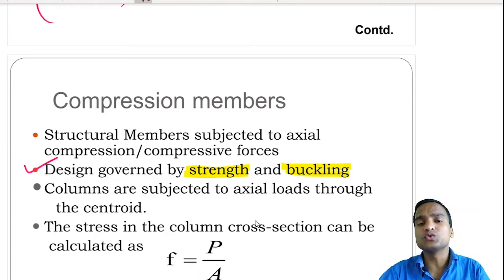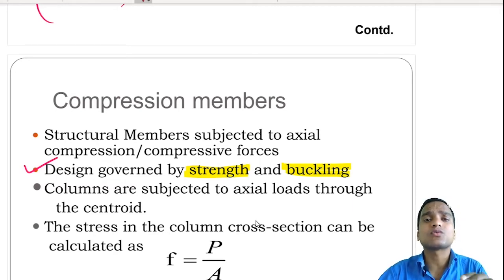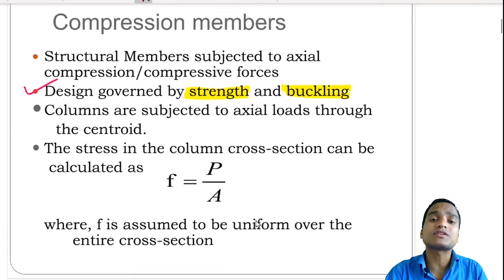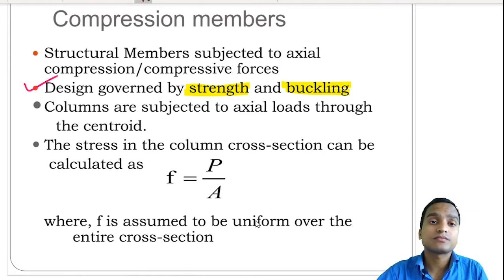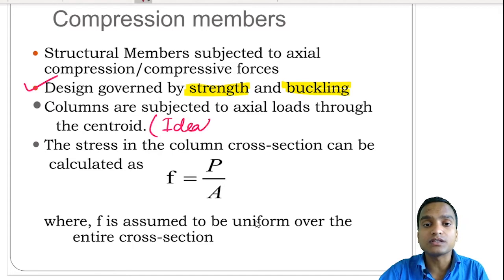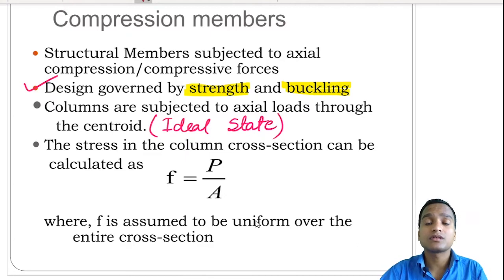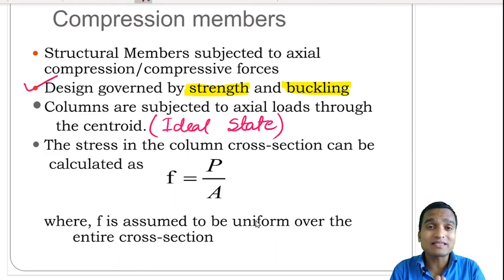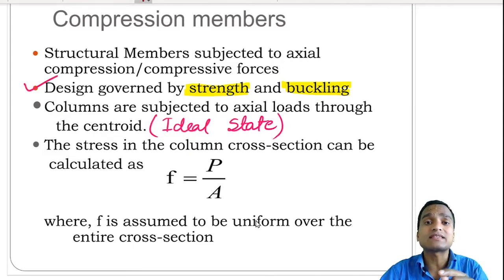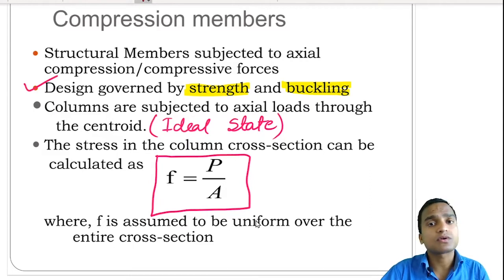Generally we don't use many empirical approaches or formulas for compression members. The main formula used is: stress equals axial force divided by cross-sectional area. This applies when columns are subjected to axial load through the centroid — which is only in the ideal state, not real life. In the ideal state, stresses in the column's cross section will be uniform throughout its length, equal to axial force divided by cross-sectional area. Here F is assumed to be uniform over the entire cross section.